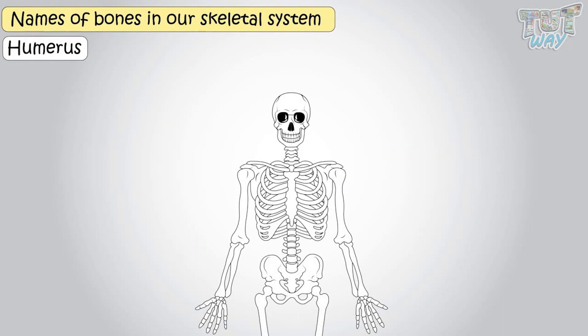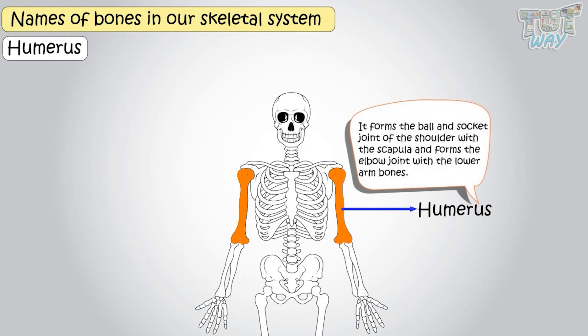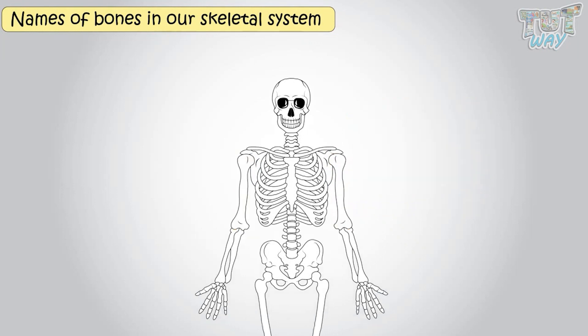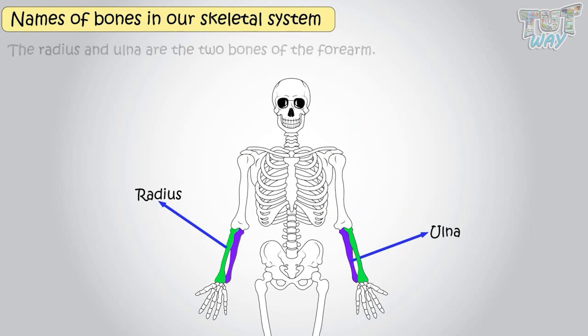Humerus is the bone of our upper arm. It forms a ball and socket joint of the shoulder with the scapula and also forms the elbow joint with the lower arm bones — radius and ulna. These are the two bones of the forearm.